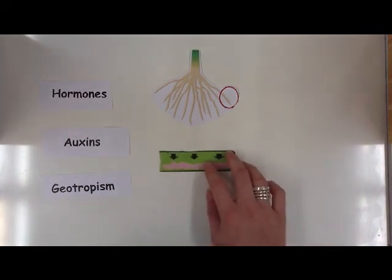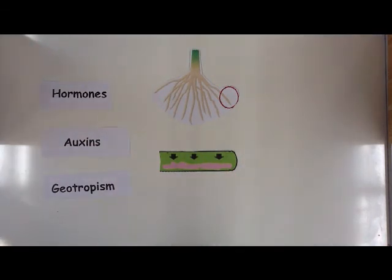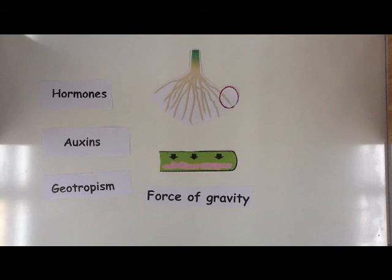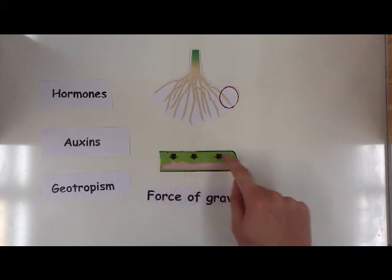Now in the roots, auxin tends to actually diffuse downwards towards the force of gravity. So that's the first key thing we need to know, it diffuses downwards towards the force of gravity. So as a result we're going to get a higher concentration of auxin on this side and we're going to get a lower concentration on this side.